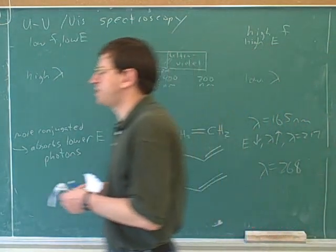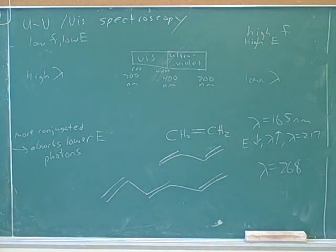And again, the whole point of UV spectroscopy is if the compound does absorb ultraviolet or visible light, that tells us that it is conjugated. If it absorbs visible light, it's very conjugated.